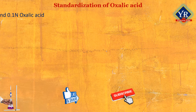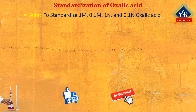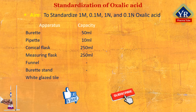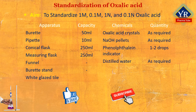The apparatus and chemicals required for the standardization of oxalic acid are listed in the tables given here. Apparatus include 50 ml burette, 10 ml pipette, 100 ml conical flask, 100 ml measuring flask, funnel, burette stand, and white glazed tile. Chemicals include oxalic acid crystals, sodium hydroxide pellets, phenophthalene indicator, and distilled water.